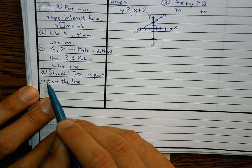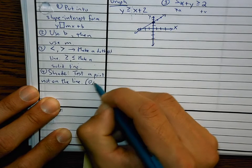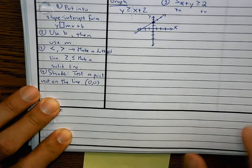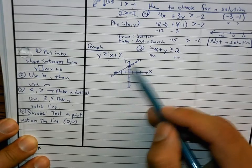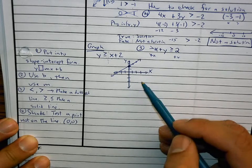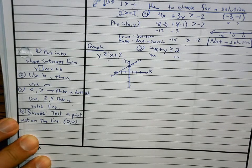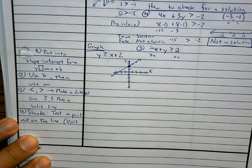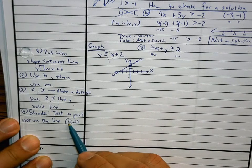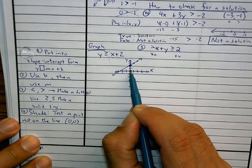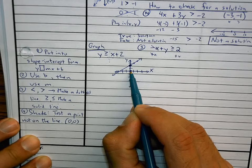Test a point not on the line. The easiest point to test most of the time is 0, 0. Either you're going to shade below this line or above this line — all the solutions are on one side of the line or the other. There is no gray area; you're either in or you're out. So let's test point 0, 0: plug in 0 for x and 0 for y — is 0 greater than or equal to 0 plus 2? No. So 0, 0 is not a solution, meaning it's on the non-shaded side. The other side is the shaded side.